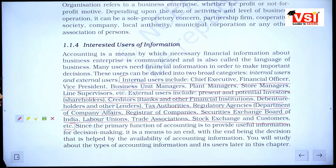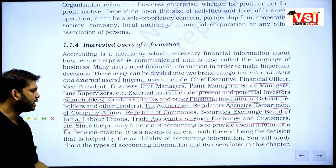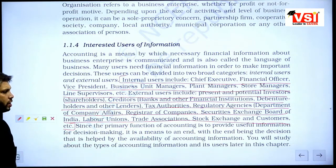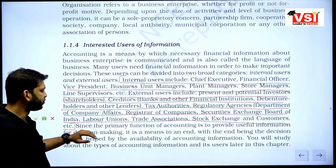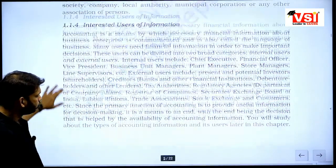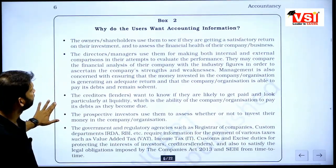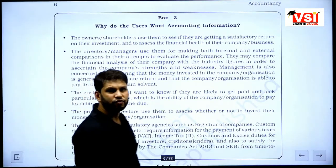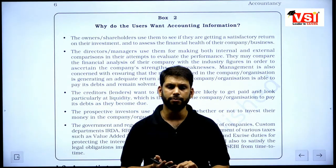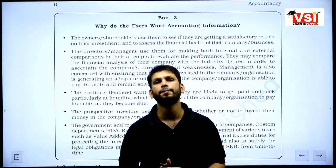Since the primary function of accounting is to provide useful information for decision making, it is a means to an end — the end being the decisions aided by the availability of accounting information. You will study about the types of accounting information and its users later in this chapter. In this lecture, we have discussed economic events, identification, measurement, recording, communication, what is an organization, and the users — how accounting can be useful.